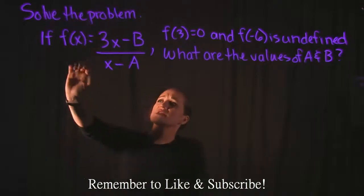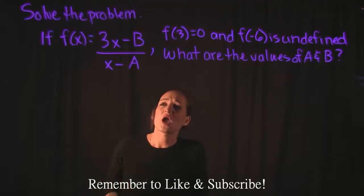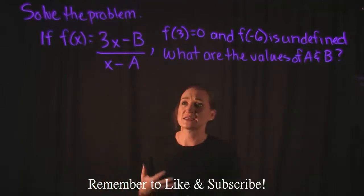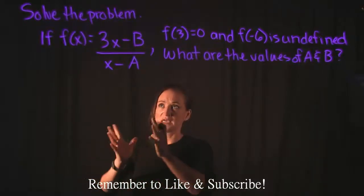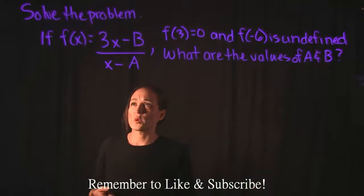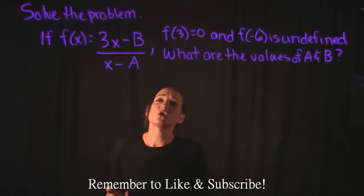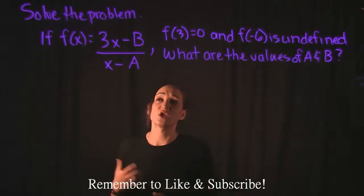So taking a look at this function here, we have f of x is equal to 3x minus b over x minus a. As the problem is here, we have three unknowns in this problem. We don't know what x is, we don't know what b is, and we don't know what a is. So that's a little bit too many unknowns.